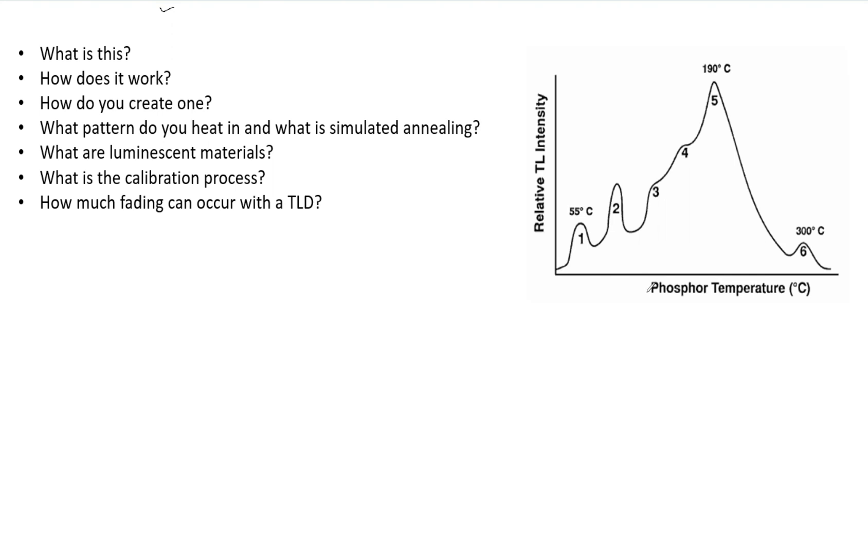As temperature is increased, the probability of the electrons escaping the traps increases. There are many traps at various different energy levels. You see all these different glow peaks because of those different traps. They all take different types of temperature to release the electrons, which is why you see these levels. Each peak here corresponds to a different energy level. That's why you don't just see one straight linear line.